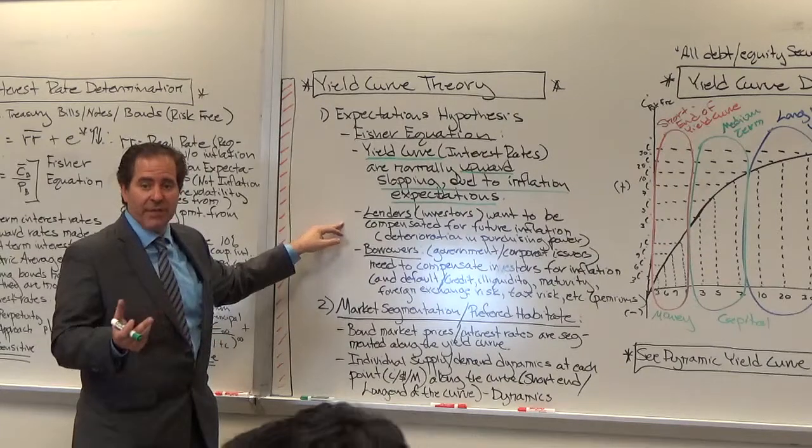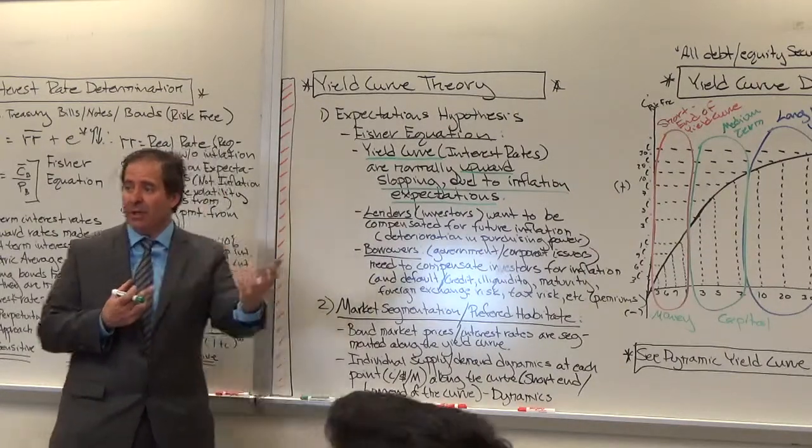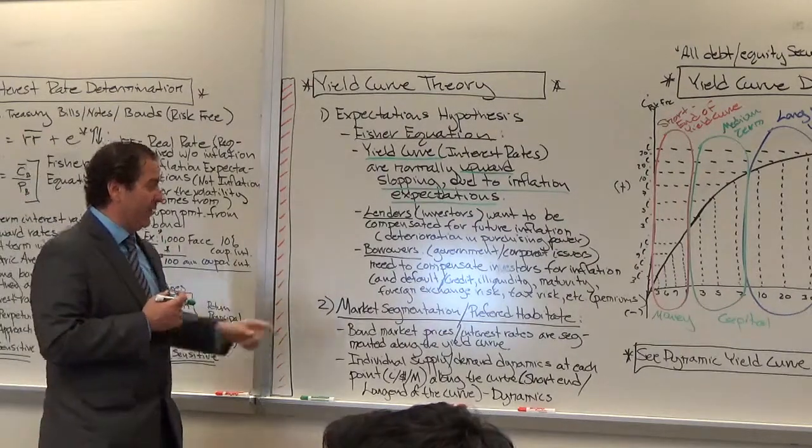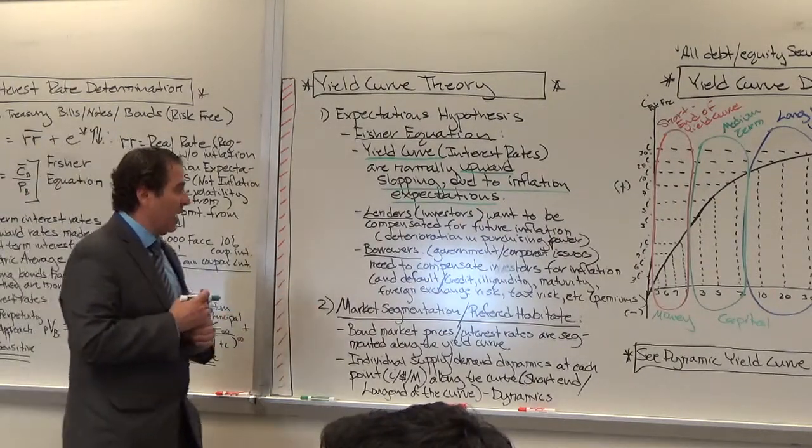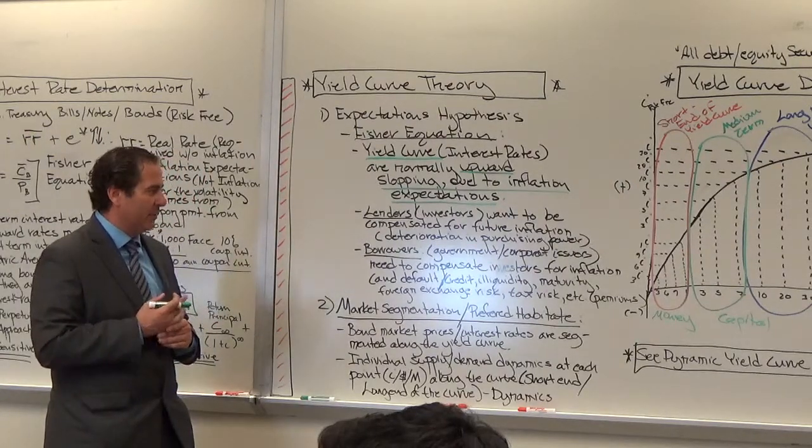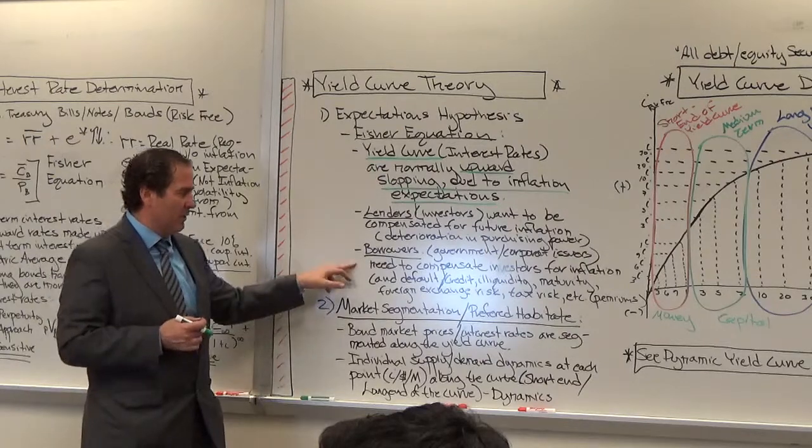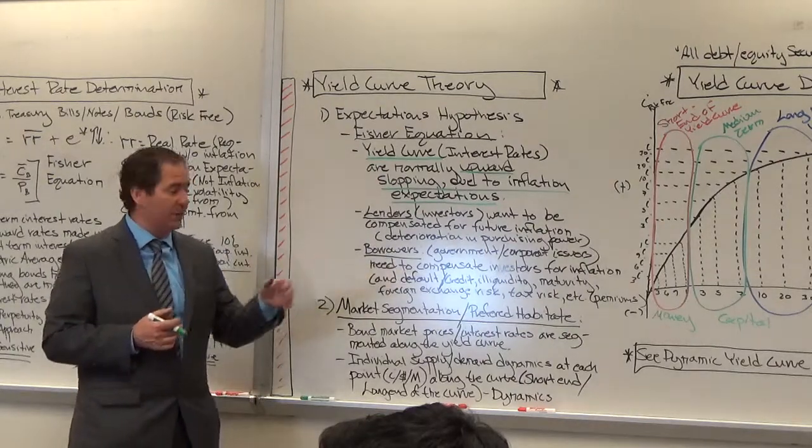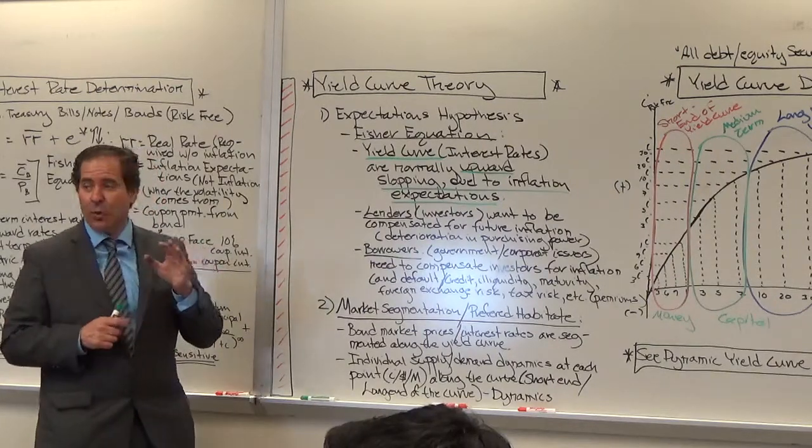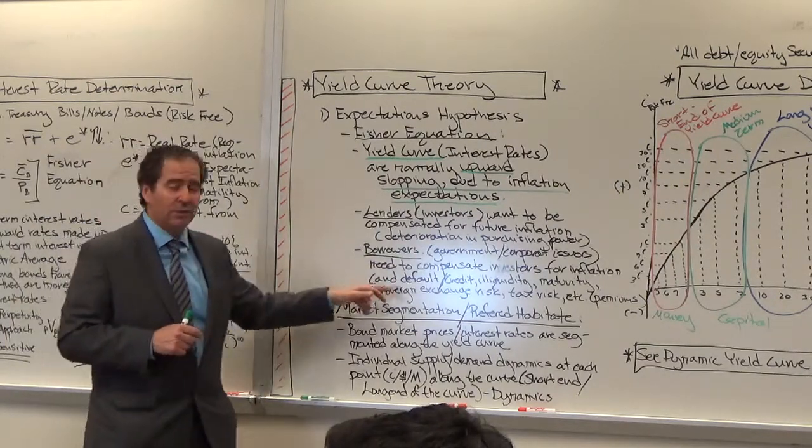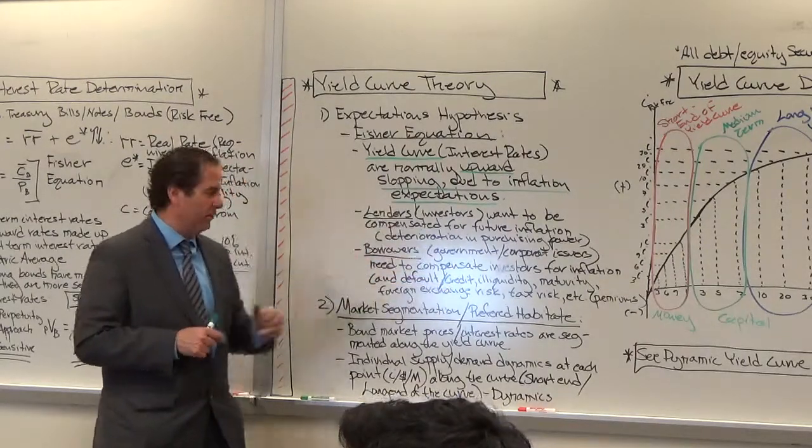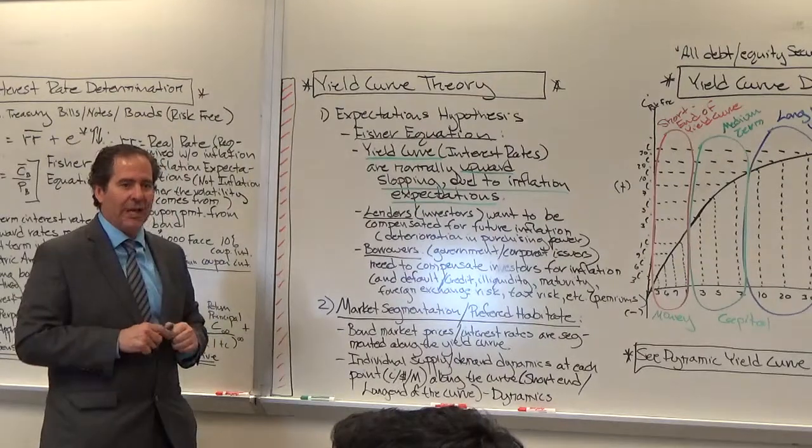So the Fisher equation basically states that yield curve or interest rates are normally upward sloping due to inflation expectations. Lenders, investors, because I'm buying the government bond, so basically I am lending them money, and they are the borrowers. I want to be compensated for future inflation, and again the deterioration in purchasing power. The borrowers, which are the government and the corporate issuers, need to compensate the investors for inflation. And in the case of corporate bonds, for default and credit risk, and illiquidity, and maturity risk, or foreign exchange or tax risk.